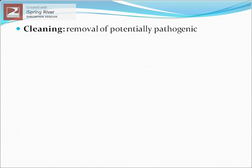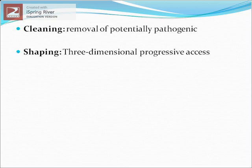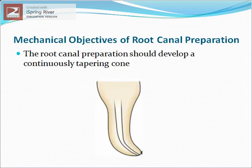Cleaning comprises the removal of all potentially pathogenic contents from the root canal system. Shaping refers to the establishment of a three-dimensional progressive access into the canal and creating an apical preparation that permits the final obturation instrument and material to fit easily.